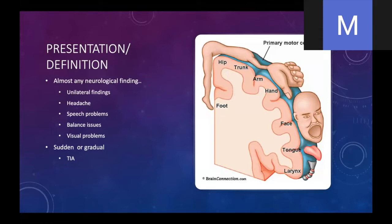There are things that can mimic strokes. The sudden nature doesn't always have to happen — it can be gradual in onset. There are also things called TIAs, which is a transient ischemic attack, or a mini stroke — a temporary neurologic deficit where you do not find any signs of ischemia on any kind of imaging that you do.